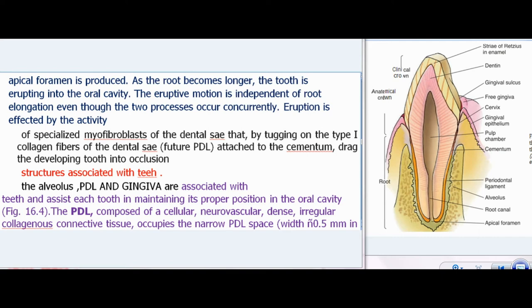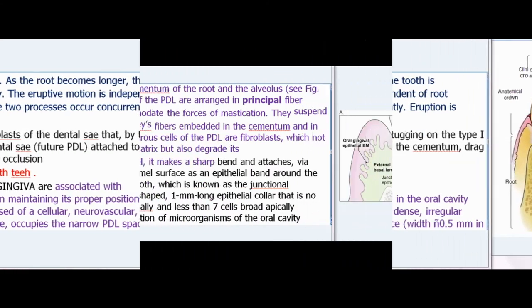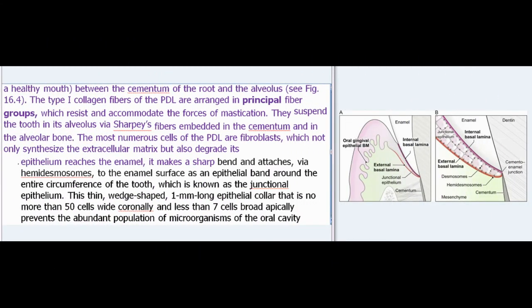Eruption is affected by the activity of specialized myofibroblasts of the dental sac that, by tugging on the type I collagen fibers of the dental sac (future PDL) attached to the cementum, drag the developing tooth into occlusion. The alveolus, PDL, and gingiva assist each tooth in maintaining its proper position in the oral cavity. The PDL, composed of a cellular neurovascular dense irregular collagenous connective tissue, occupies the narrow PDL space of about 0.5 mm between the cementum of the root and the alveolus.